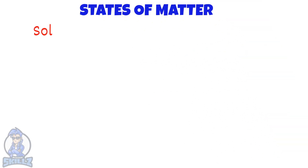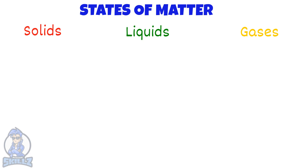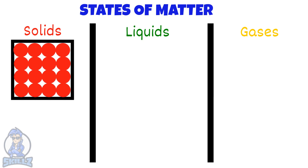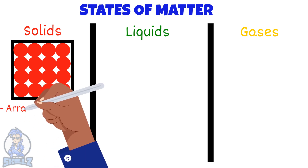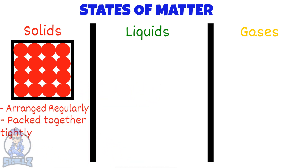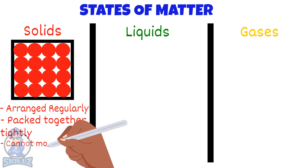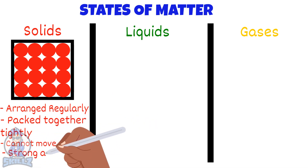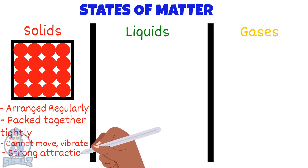We already know that solids, liquids and gases are the three states of matter. Let's look at each of their features. A solid's particles are arranged regularly and packed together tightly. These particles can only vibrate. They cannot move around. They have strong attraction forces between the particles.